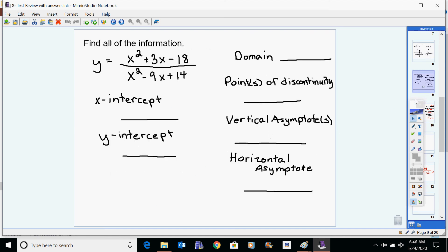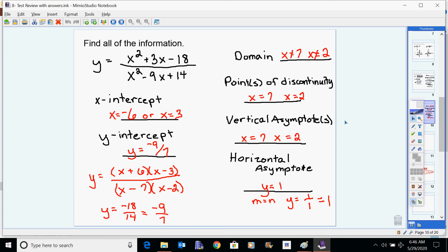Then there was these type of problems where you have to find all of the information. It always starts with factoring. So you need to factor the numerator and the denominator, then pull all this information out of what you got. So here's our factored form right here. Our x-intercepts come directly from the numerator, because they're what gives you a y of being zero. So y being zero means that x plus six has to be zero, negative six, or x minus three has to be zero, which gives you the three.